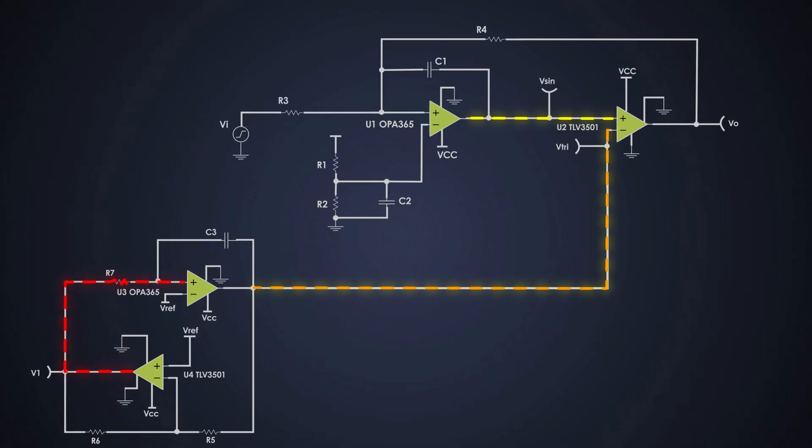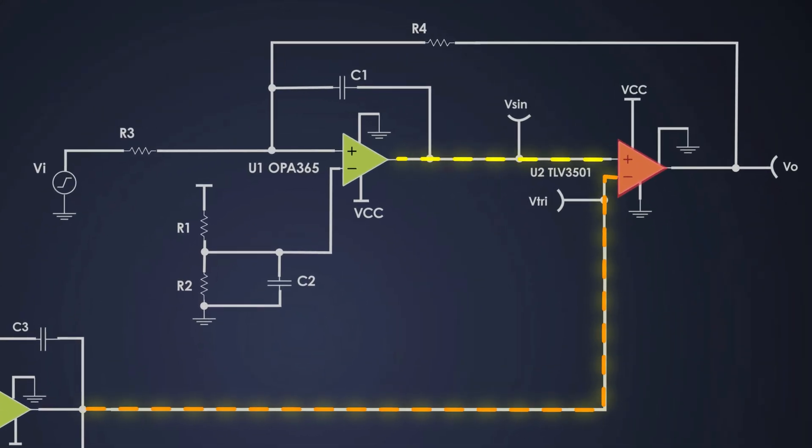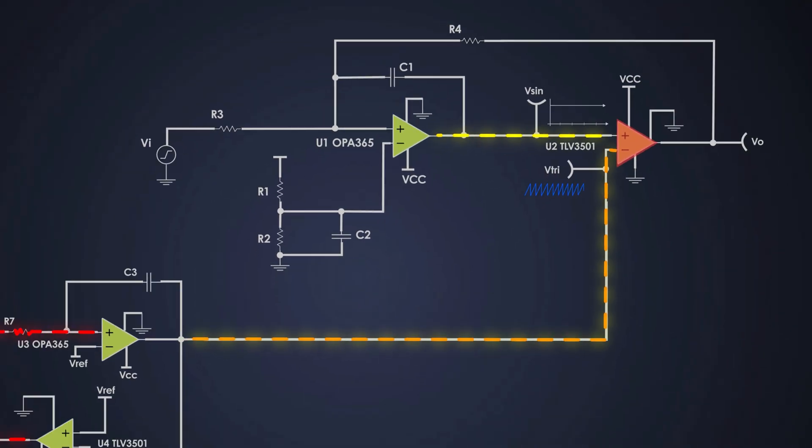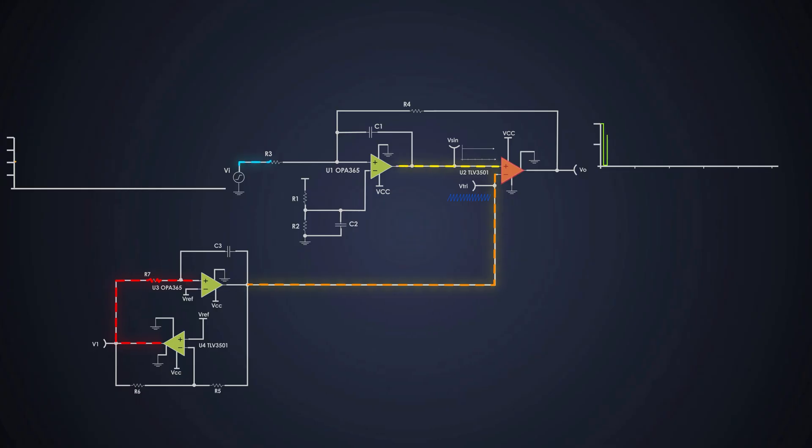After that, we use op-amp U2 as a comparator. It compares the output of the error amplifier and triangular waveform generator. U2 compares Vsin and Vtri. If Vsin is greater than this, then output is high.